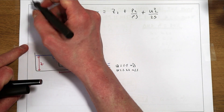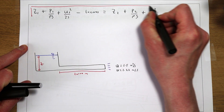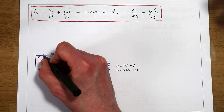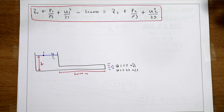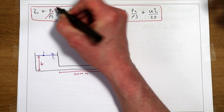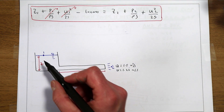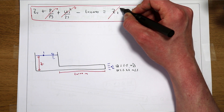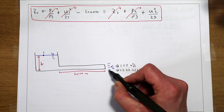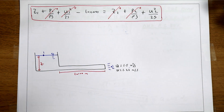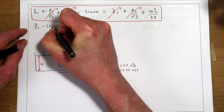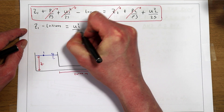We apply Bernoulli's equation between the water surface of the reservoir (point 1) and where the water exits the pipe into the storage reservoir (point 2). At point 1: no pressure (open to atmosphere), no velocity (water surface velocity is negligible). At point 2: no elevation (pipe is at base), no pressure (open to atmosphere), so we just have velocity head. This gives us: elevation minus losses equals velocity head at point 2.